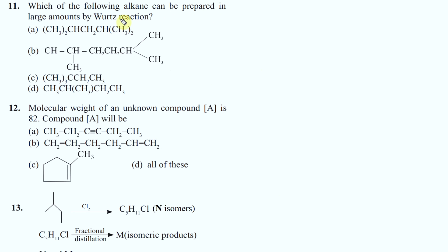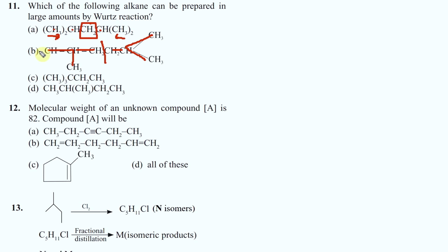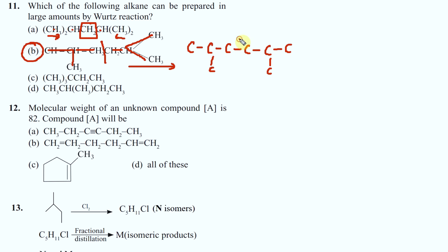Question 11: which of the following alkanes can be prepared in large amounts by Wurtz reaction? A symmetrical alkane is easy to prepare. Look from both sides of the molecule - two carbons on one side, two carbons on the other. Check for odd number - not good. When you take the isopropyl group on both sides - carbon, carbon - there is symmetry right there. The answer is the option with symmetry in the carbon skeleton, confirmed by drawing the structure.